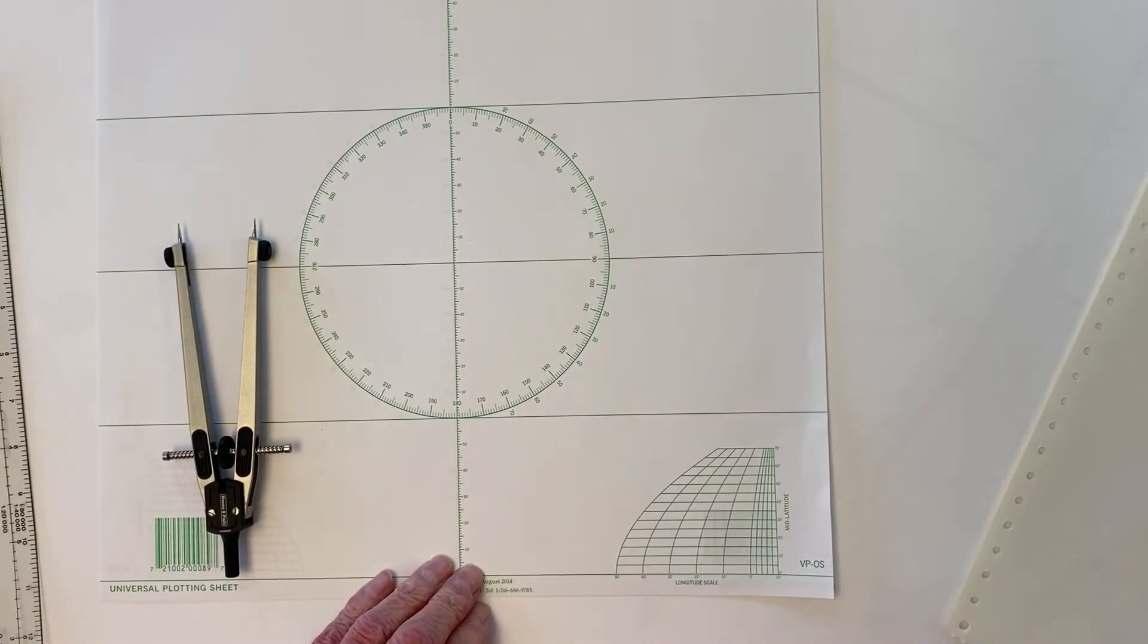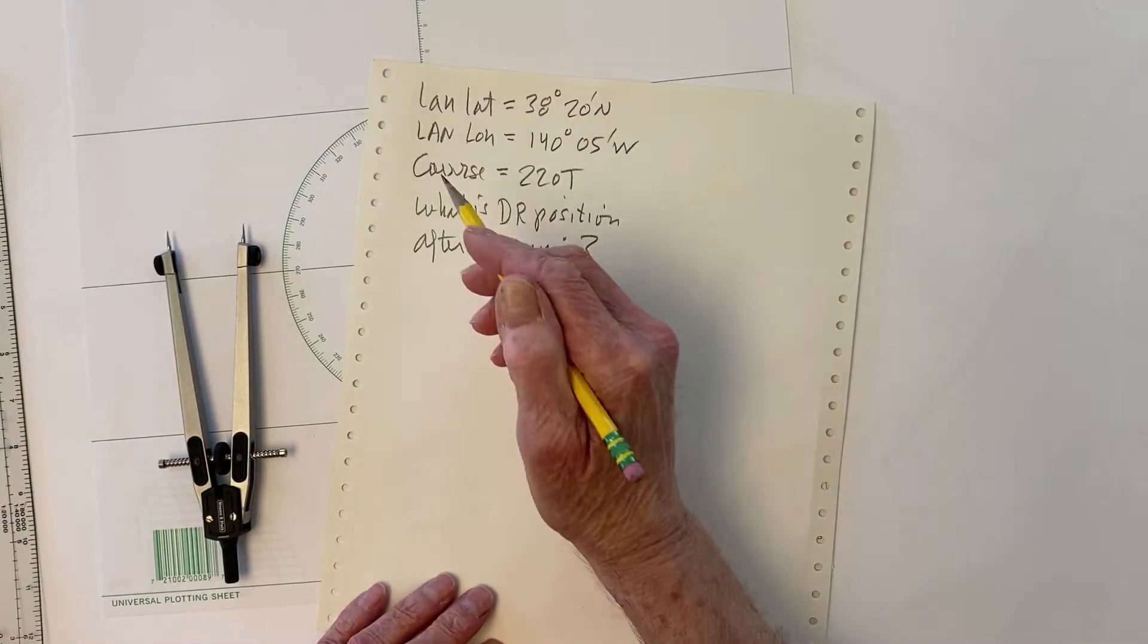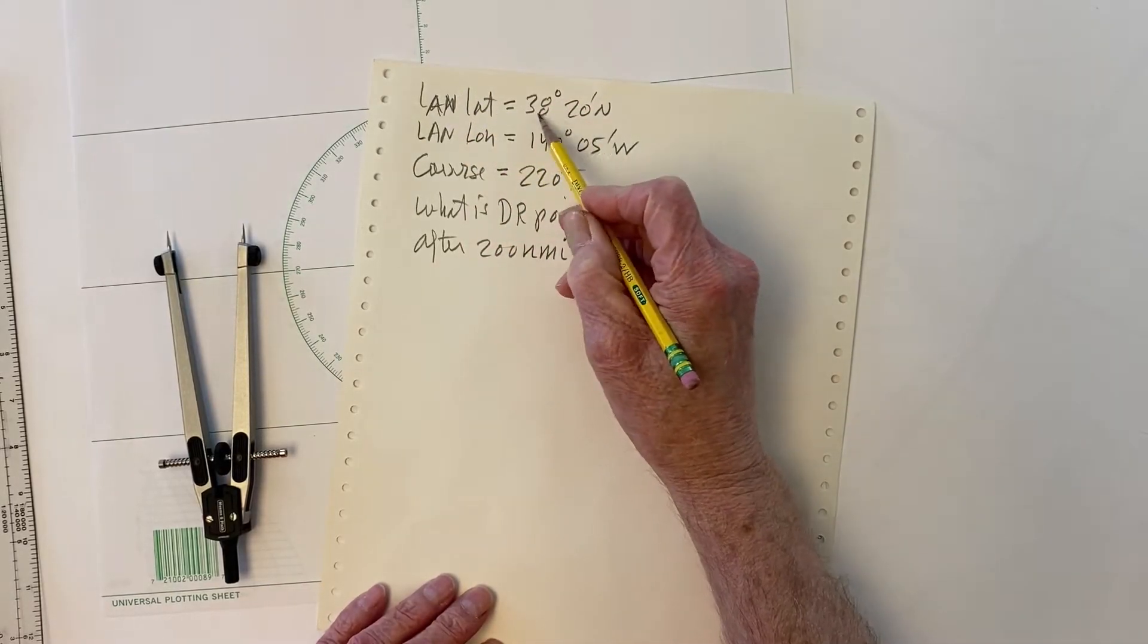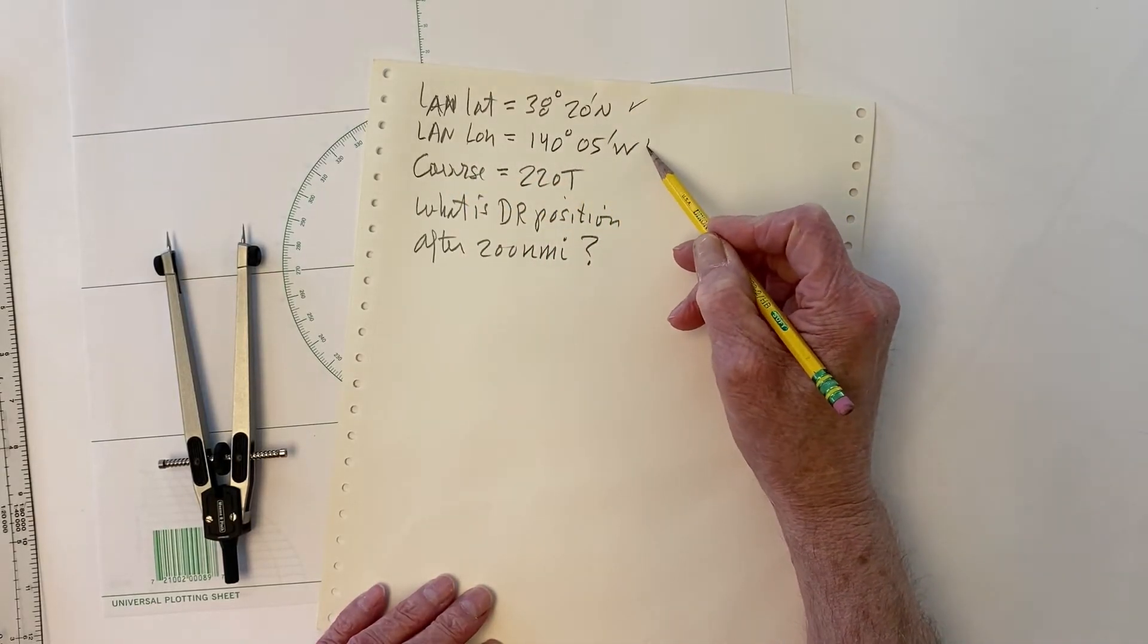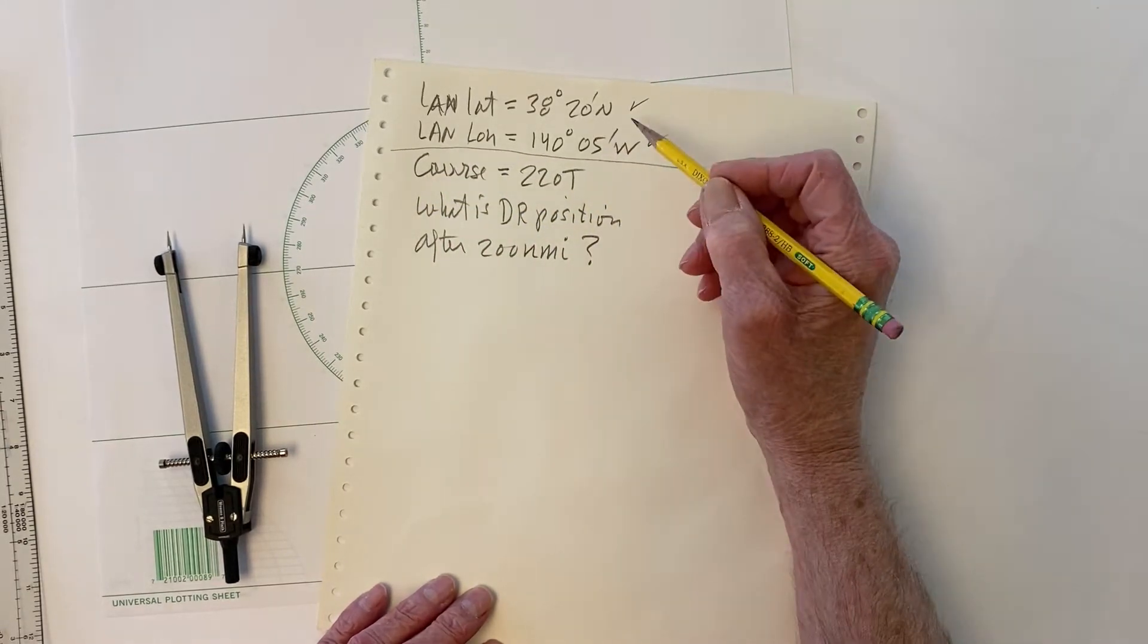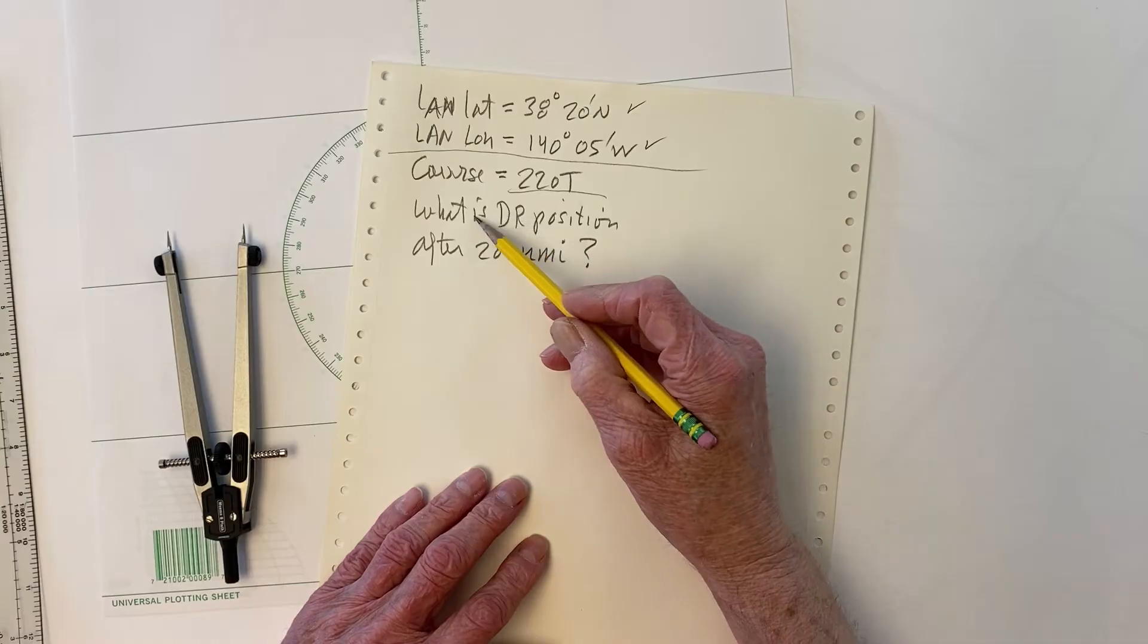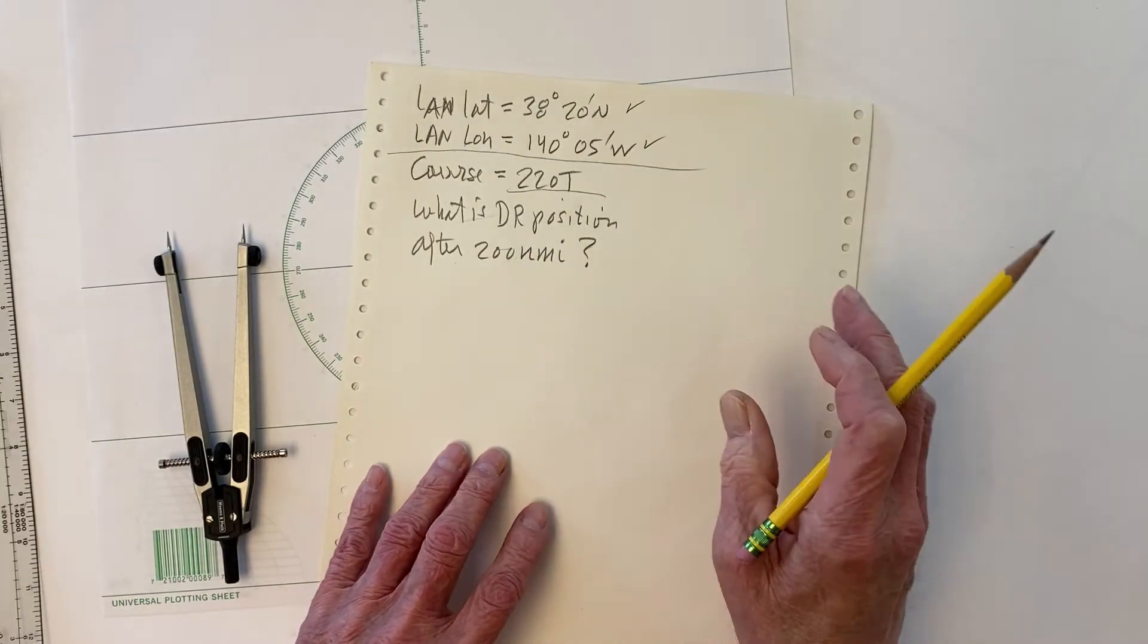Okay, so in this plotting sheet, here will be our exercise that we want to do. I've got an LAN I measured at noon, local apparent noon. We measured a latitude 38 degrees 20 minutes north, longitude 140 degrees 05 minutes west. Now, somehow we measured that or somehow we know it, but that's our position. We want to plot that position on this chart. And then we want to lay out a course that's 220 true. And then we want to ask ourselves, what is our DR position after 200 nautical miles? That's the exercise.